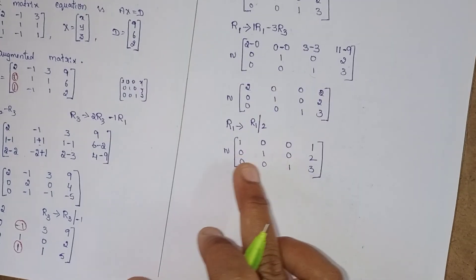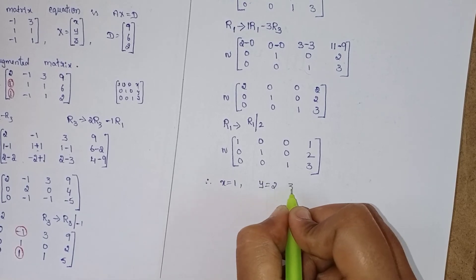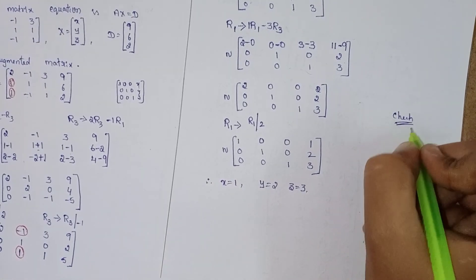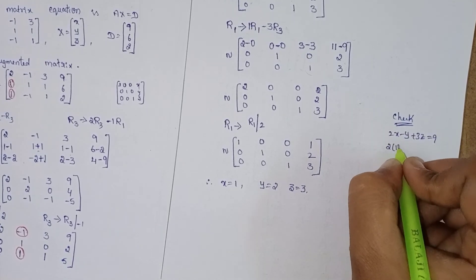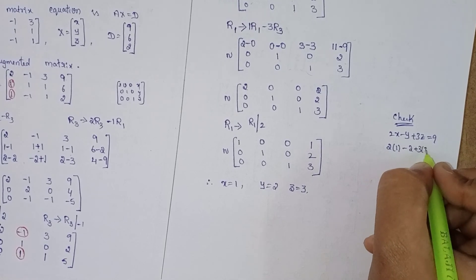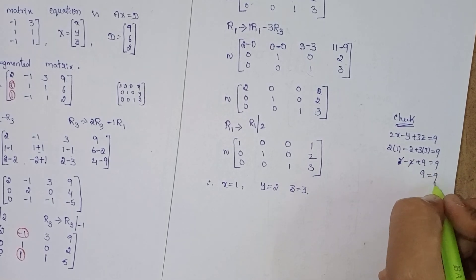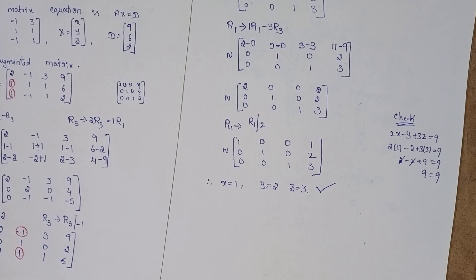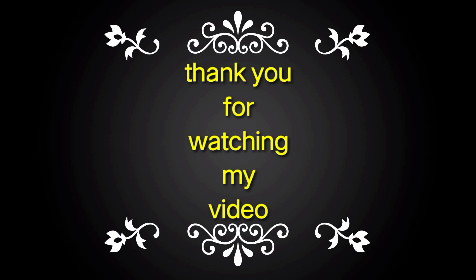Let's check: 2x minus y plus 3z equal to 9. Substituting: 2 times 1 minus 2 plus 3 times 3 equals 9. That gives 2 minus 2 plus 9 equals 9. The plus 2 and minus 2 cancel, leaving 9 equals 9. So our solution is correct. This is the solution. Next class we will discuss the next problem. Thank you for watching — take care!